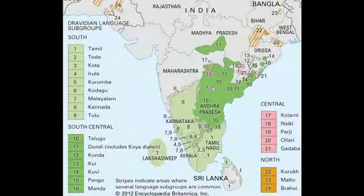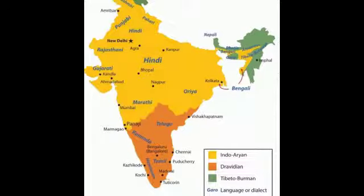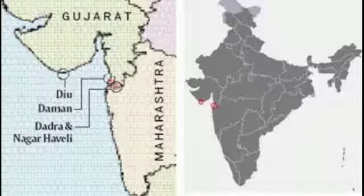Question 1: Kannada and Tamil belong to the Dravidian family. Question 2: Bangla and Hindi belong to the Indo-Aryan languages. Question 3: The main languages of the people of Jammu and Kashmir are Urdu, Kashmiri, Ladakhi and Dogri.